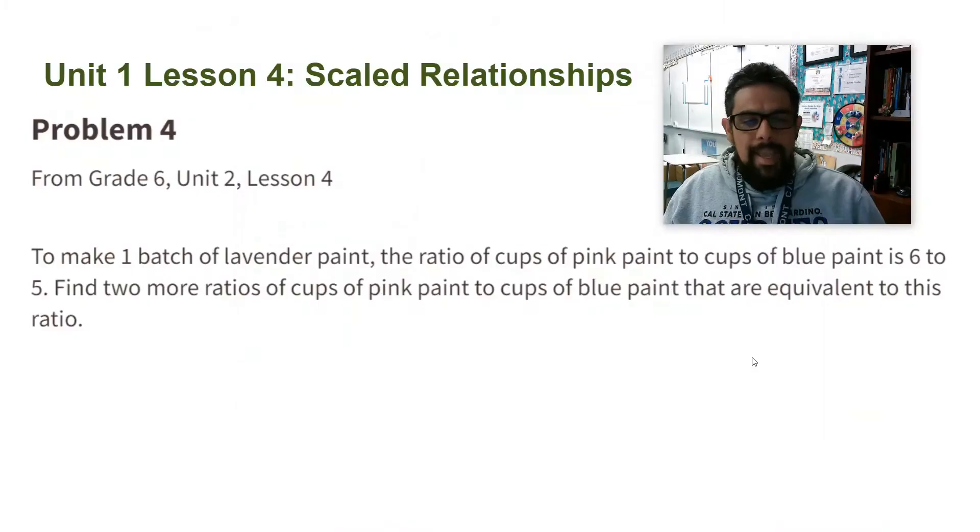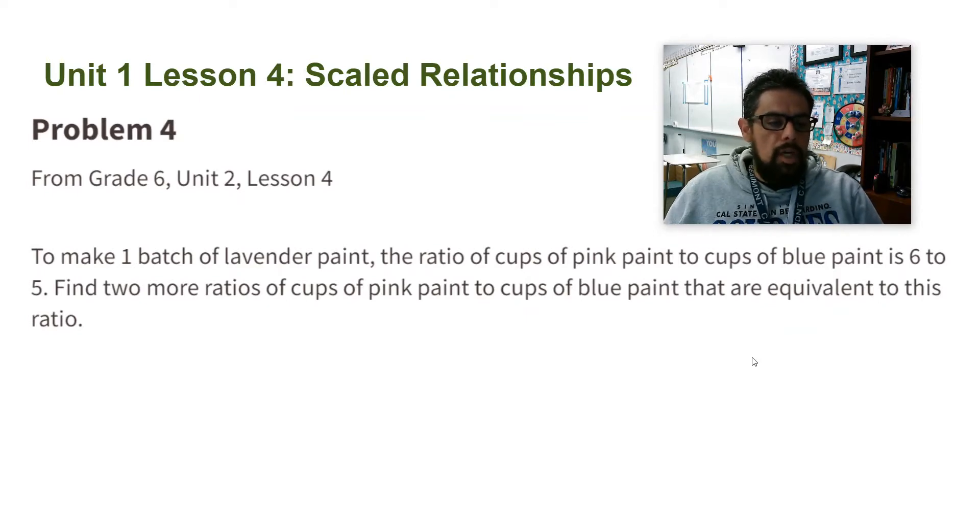Alright ladies and gentlemen, Mr. Uruthia here and we're going over Unit 1 Lesson 4 practice problem number 4. To make a batch of lavender paint, the ratio of cups of pink paint to cups of blue paint is 6 to 5. Find two more ratios of cups of pink paint to cups of blue paint that are equivalent to this ratio.